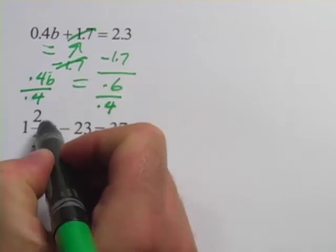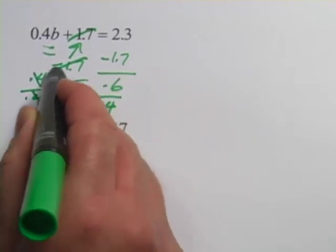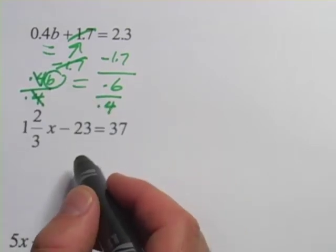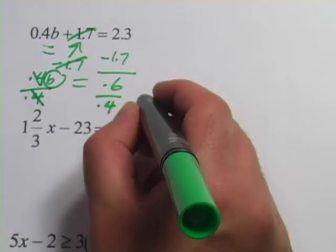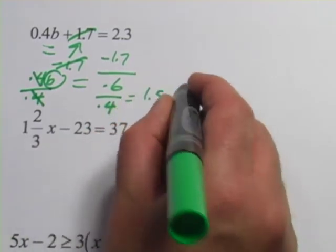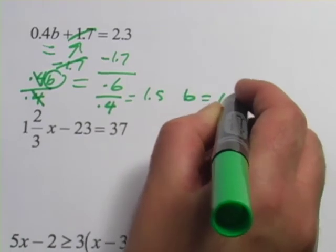On this side, these 0.4s, top and bottom, are going to cancel out, leaving b all by itself, exactly what you want. On the other side, you can pull out your calculator and figure out that 0.6 divided by 0.4 is 1.5, so b equals 1.5.